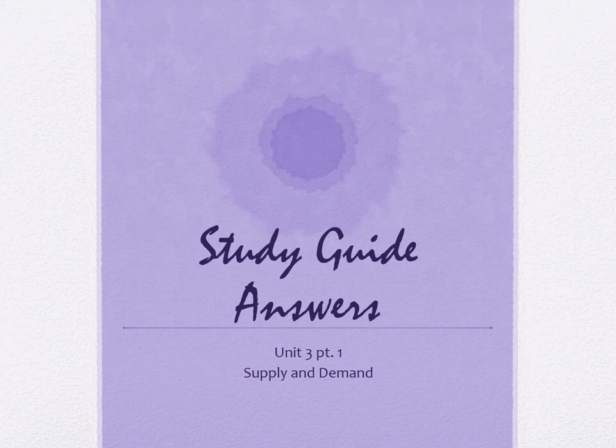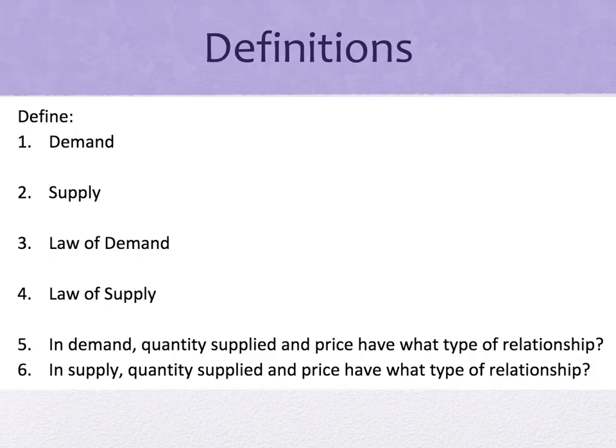Hey everybody, this is the study guide answers for the unit 3 part 1 supply and demand test on Monday. Remember that this stuff has been around forever — supply and demand are used every single minute of every single day in every single aspect of everything, especially in market economies. The answers are out there; try using AC DC Econ or Crash Course Economics. So without further ado, let's look at the answers for our study guide.